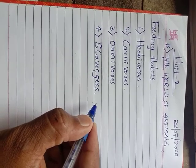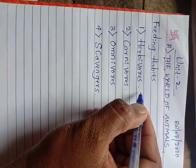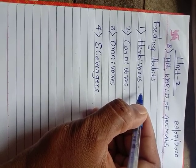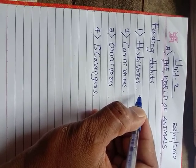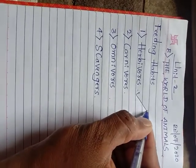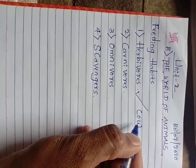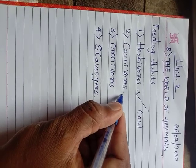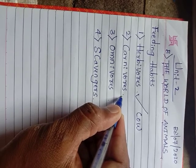Herbivorous means some animals like cow, buffalo, and horse eat only plants and plant parts. Such animals are called herbivorous. Examples: cow, and so many more are there. And second one, carnivorous — some animals like tigers, leopard, frog, lion,